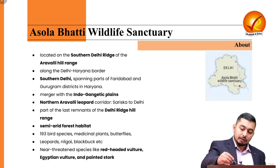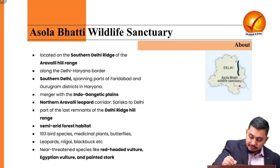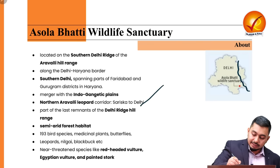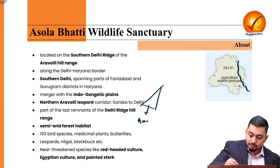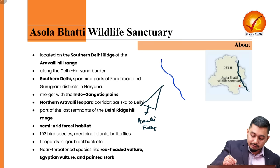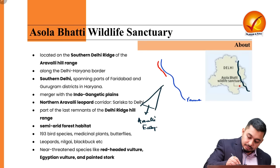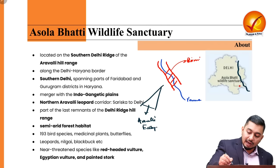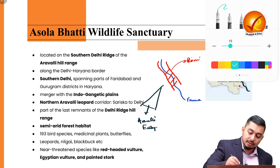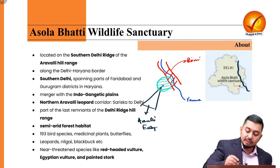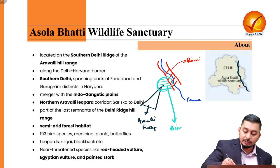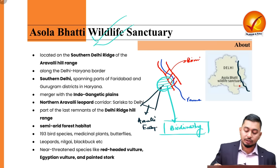This region is important because of the interface between the Aravali ecosystem and the River Yamuna ecosystem. When both ecosystems merge together, the regions have more biodiversity, and that is why this wildlife sanctuary has been significant. The sanctuary hosts approximately 193 bird species, medicinal plants, butterflies, leopards, nilgai, and blackbuck.